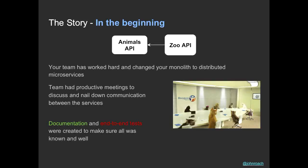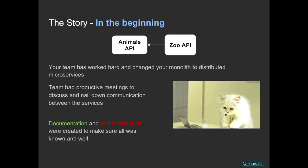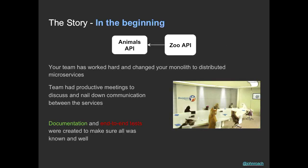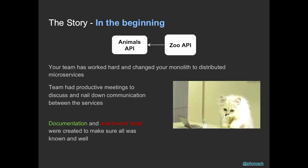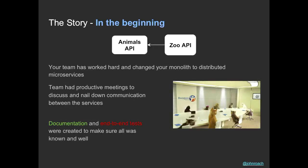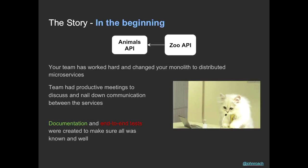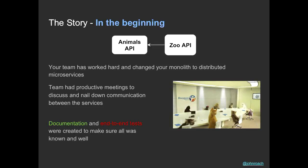Everything starts with a story. We had this one team that was working on a zoo application. They had monoliths, and they decided to take a different approach and go with more modern architecture — microservices. So they separated out these concerns and created small APIs: the zoo API and the animals API.